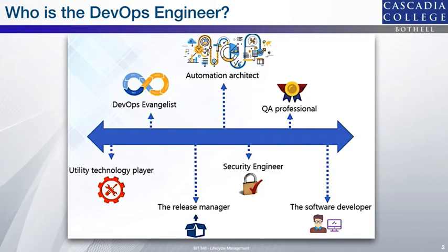There are many roles that have been played in this new emerging field, including DevOps evangelist, automation architect, QA professional, but also there are some hands-on activities like utility, technology player, release manager, security engineer, and of course the software developer.